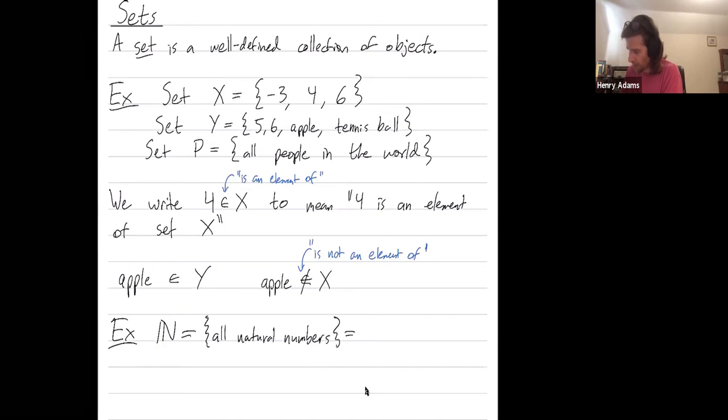So this is the set of all natural numbers. And what do I mean by that? This is just the counting numbers. So one, two, three, four, five, six, seven, et cetera, all the way as high as you can go. So whereas set X had three elements in it and set Y had four elements in it, and set P had a certain number of billions of people in it, the set of natural numbers has an infinite number of elements in it.